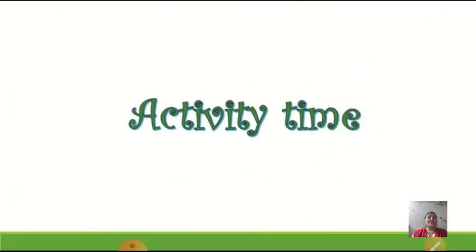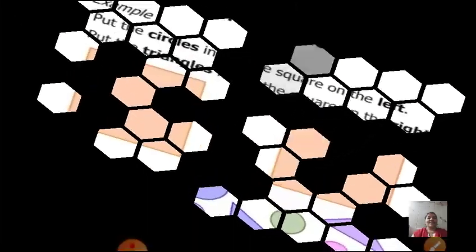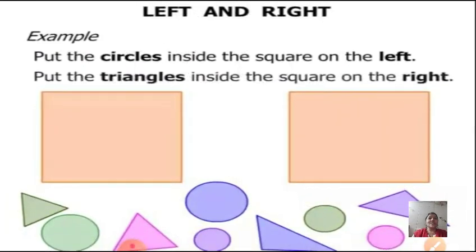Now children, today we are going to do an interesting activity. We can see different shapes over here - circles, triangles, and two big squares. Put the circles inside the square on the left, and put the triangles inside the squares on the right.